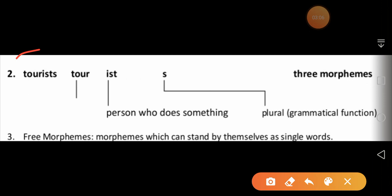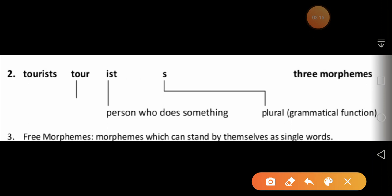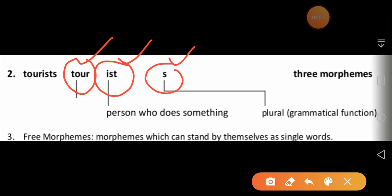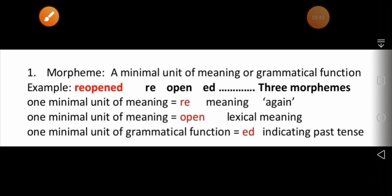Here is another example: 'tourists.' It is a plural noun and it can be broken down into three parts: 'tour,' 'ist,' and 's.' Each part is known as a morpheme. So morphology deals with parts of words or forms of words, and these forms are known as morphemes.